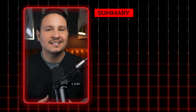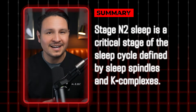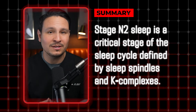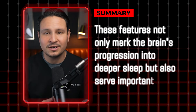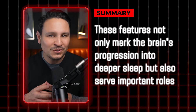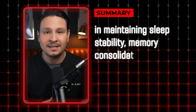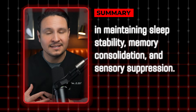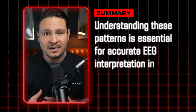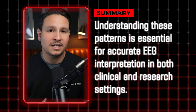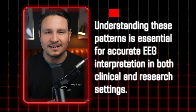In summary, Stage N2 sleep is a critical stage of the sleep cycle defined by sleep spindles and K-complexes. These features not only mark the brain's progression into deeper sleep, but also serve important roles in maintaining sleep stability, memory consolidation, and sensory suppression. Understanding these patterns is essential for accurate EEG interpretation in both clinical and research settings.